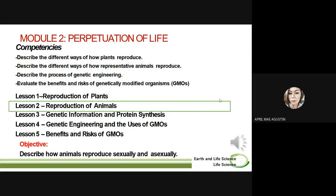Module number 2 is all about the perpetuation of life. We are done discussing Lesson 1, which is all about the reproduction of plants. So today, we will be discussing our second lesson, which is all about the reproduction of animals. Our objective is to describe how animals reproduce sexually and asexually.